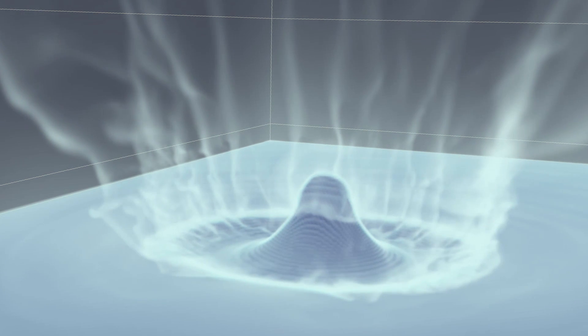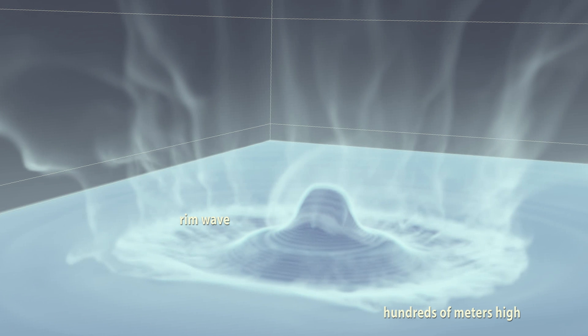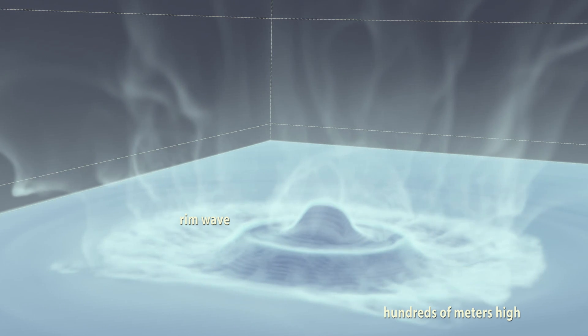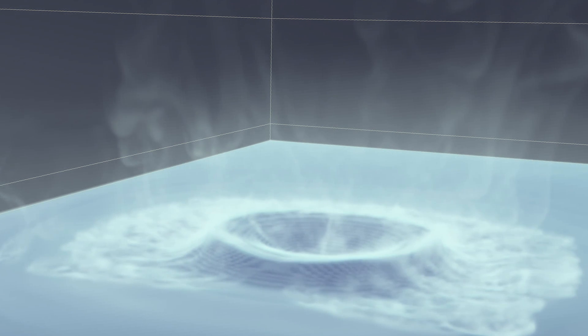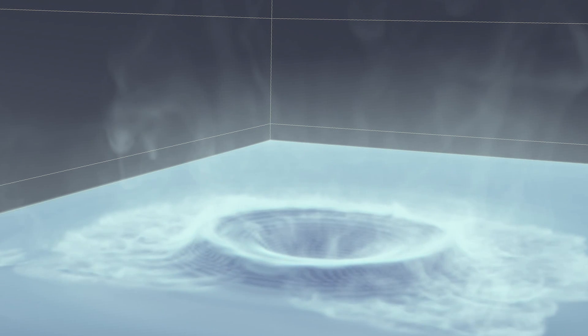This jet collapses to form a rim wave, which is hundreds of meters high. A new water jet begins to form, which will in turn create a new rim wave, a process that continues for some time. Each of these rim waves has the potential to become a tsunami.